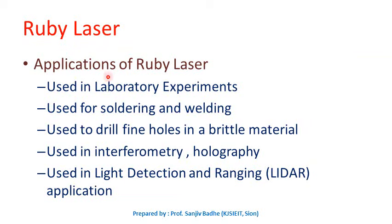These are the applications of ruby laser. The wavelength of the laser beam is 6943 angstroms, which lies in the visible range and is red in color. So ruby laser can be used in various laboratory experiments, soldering and welding applications, drilling fine holes in brittle materials like glass, interferometry, holography for creating three-dimensional images, and light detection and ranging (lidar) applications.